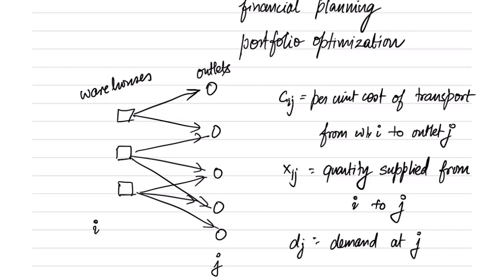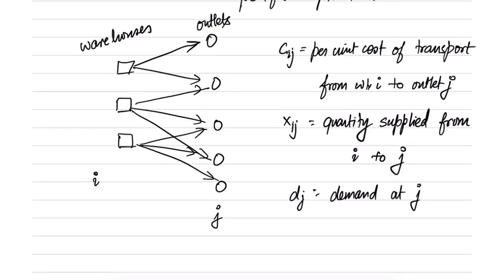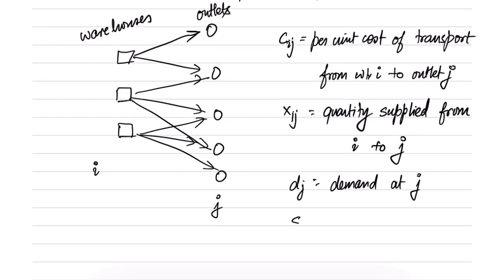Some outlets are in probably busy areas and therefore have a lot of demand, and some outlets have lower demand. Let dj denote the demand of outlet j. Then let Si denote the availability at warehouse i.